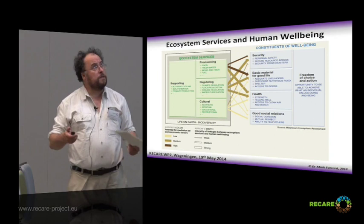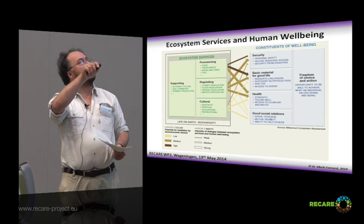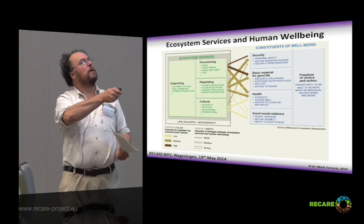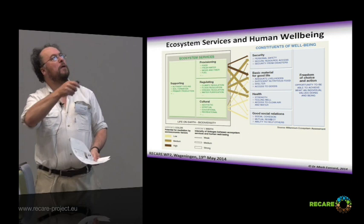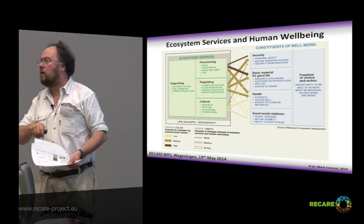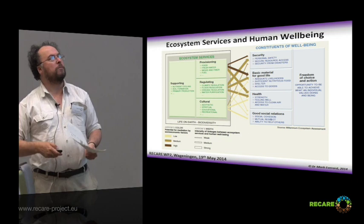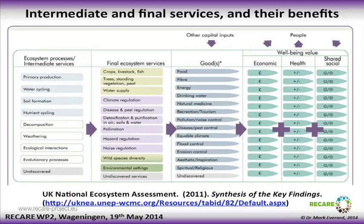This is the diagram from the Millennium Ecosystem Assessment. These supporting services — the bit of the iceberg that's under the water — are producing the other services: provisioning, regulatory, cultural. Various of them feed through to constituents of human well-being. It says well-being there, but it's not about polar bears, frankly. It's about us. Yes, we care about polar bears, so polar bears are in there, but it's about us.